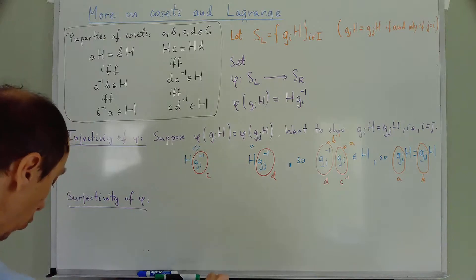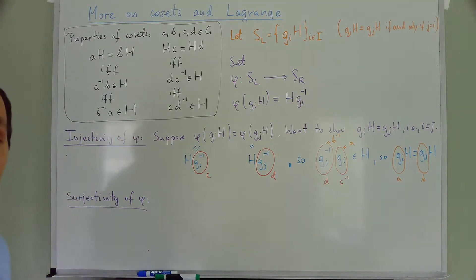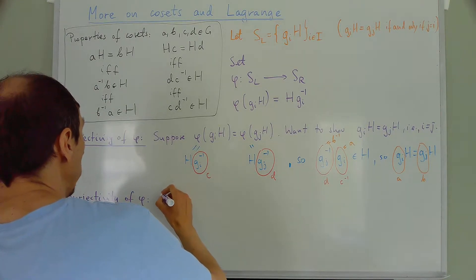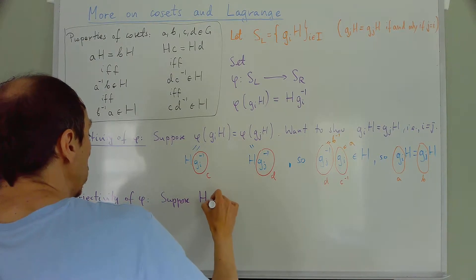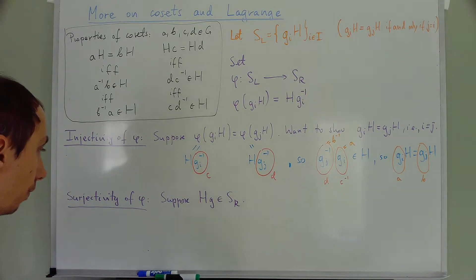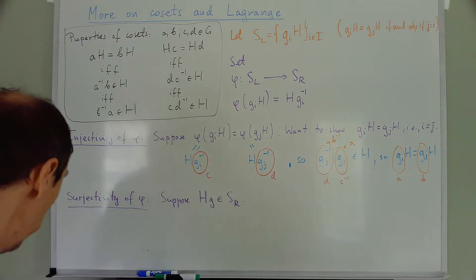So what do I do? Well, I take an arbitrary right coset and show that there is some left coset that maps to it. So suppose HG is in SR. It's just some right coset.